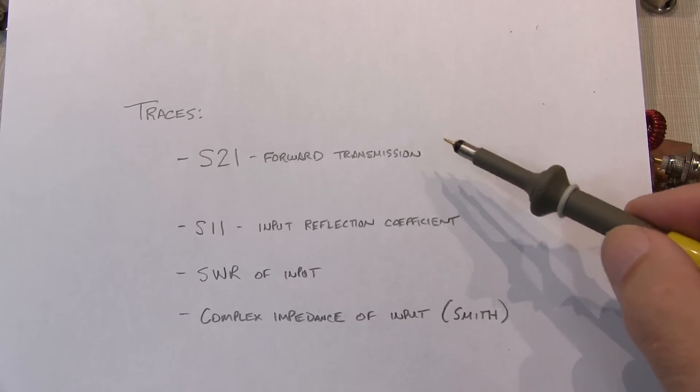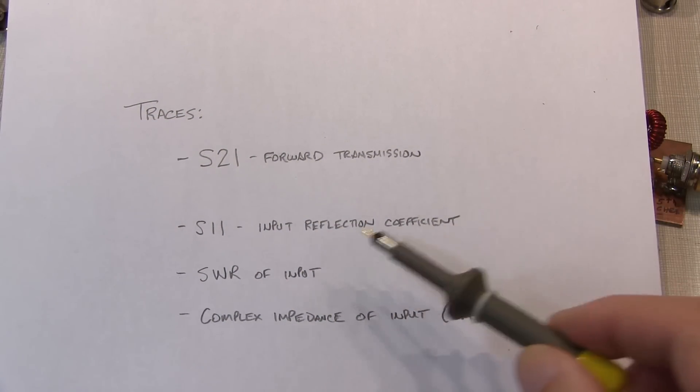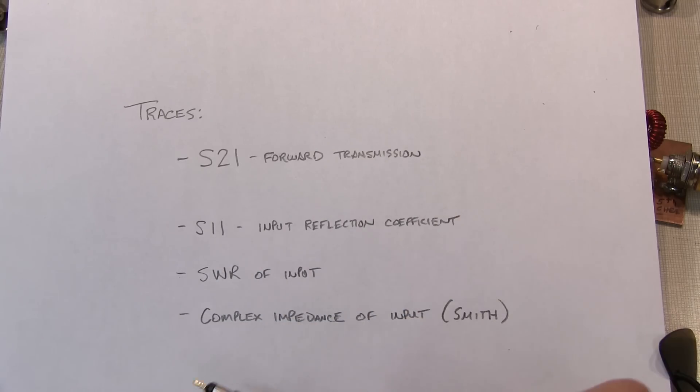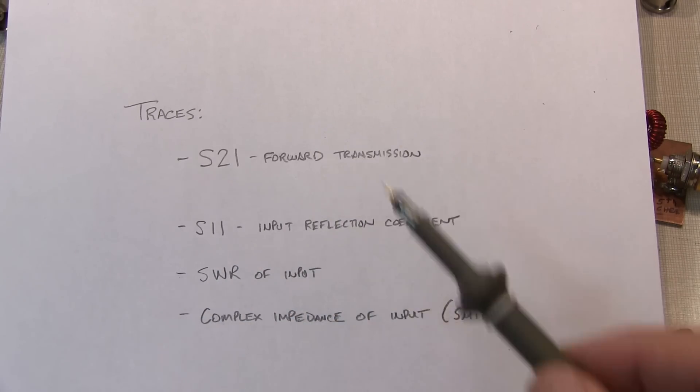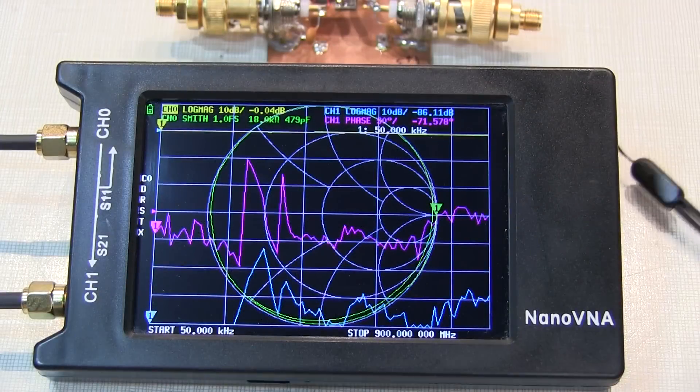Now certainly the most important characteristic to look at is S21, or the forward transmission characteristic, but we'll also look at S11, or input reflection coefficient, we'll also look at the SWR of the input, which is mathematically related to that of course, and we'll also look at the complex impedance of the input on the Smith chart, because we can.